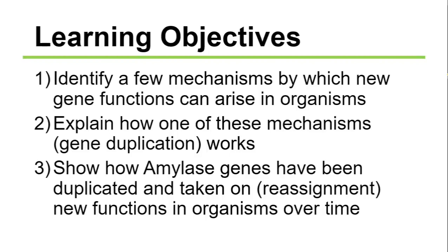In conclusion, I hope we've learned here the mechanisms by which new gene functions can arise in organisms — how new genes are created — and I've explained how one of those mechanisms, gene duplication, can work, by showing you the amylase gene in human beings and domesticated dogs.